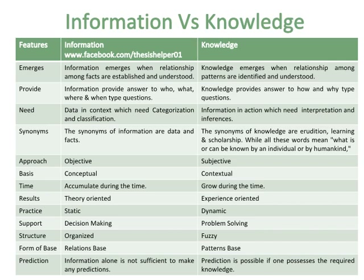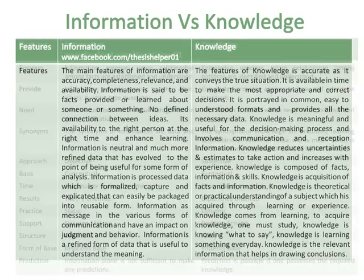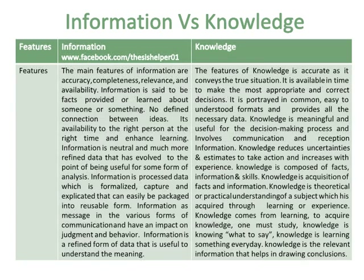Information alone is not sufficient to make any predictions, while prediction is possible if one possesses the required knowledge. The main features of information are accuracy, completeness, relevance and availability. Information is said to be facts provided or learned about someone or something, with no defined connection between ideas, and its availability to the right person at the right time enhances learning.